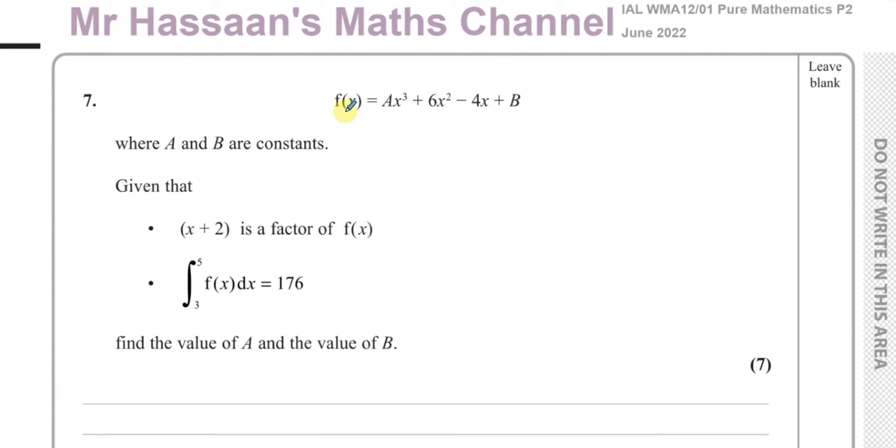Here we have a function f(x) equals ax³ plus 6x² minus 4x plus b, where a and b are constants. We're told that (x+2) is a factor of f(x), and also the integral between the limits of 3 and 5 of f(x) with respect to x equals 176. We've got to find the value of a and the value of b given this information.